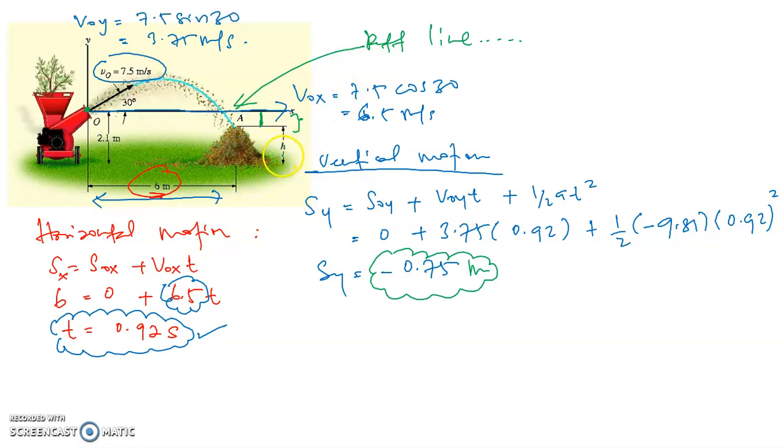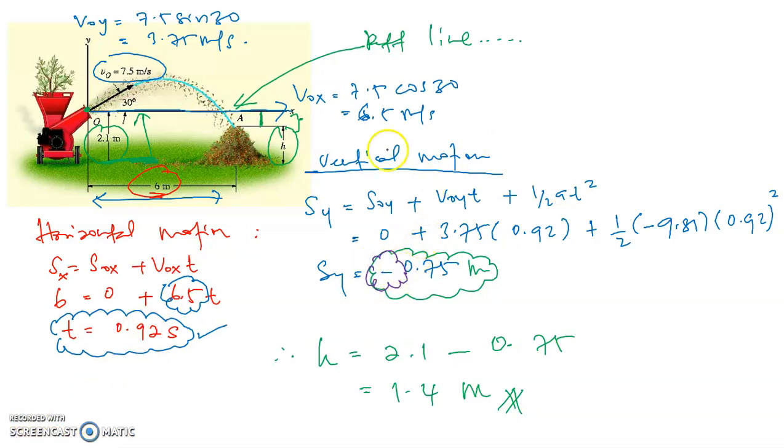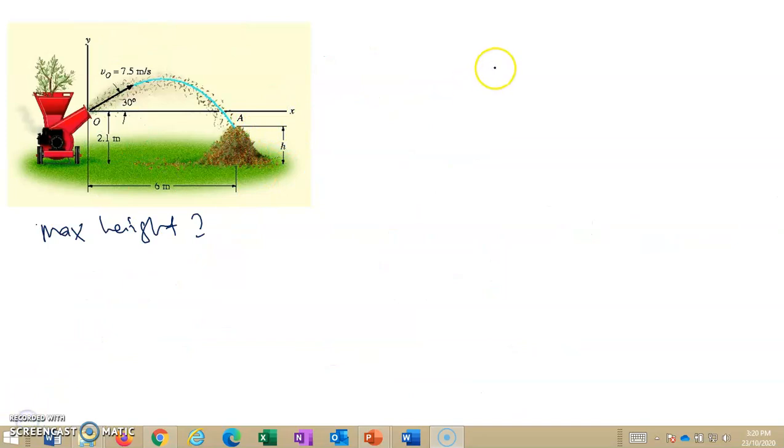The question is asking you to get h, the total distance from the ground. The distance from ground to the reference line is 2.1 meters. So h is equal to 2.1 minus 0.75, which is 1.4 meters. The negative sign here is only mentioning the distance below the reference line.